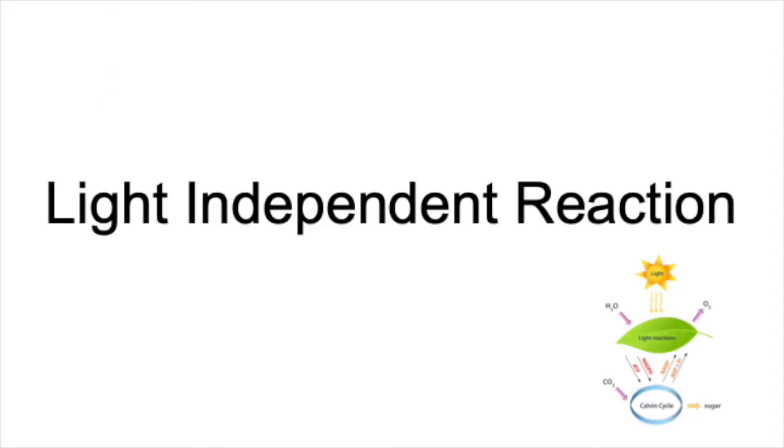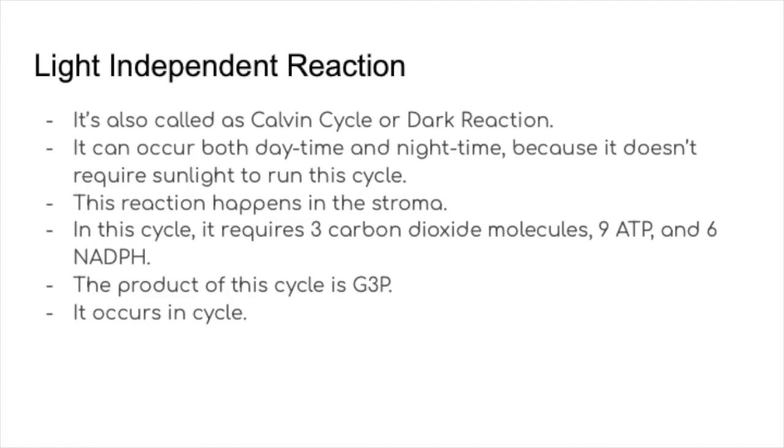Let's talk about light independent reaction. For the light independent reaction, it is also called the Calvin cycle or dark reaction. It's named dark reaction because it can occur both daytime or nighttime because it doesn't require sunlight to run this cycle. The reaction happens in the stroma or the liquid part of the chloroplast. And in this cycle, it requires three carbon dioxide molecules, 9 ATP, and 6 NADPH. The product of this cycle is G3P, and this all process occurs in a cycle.